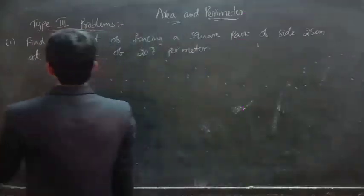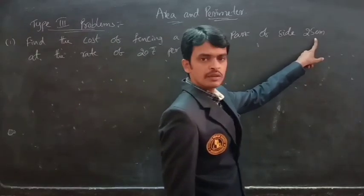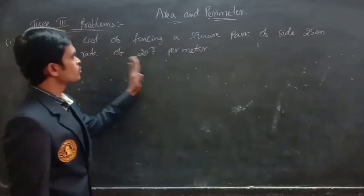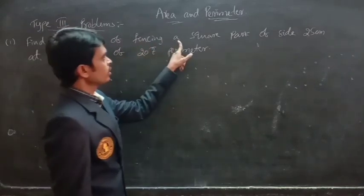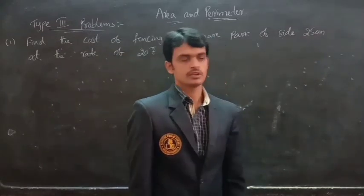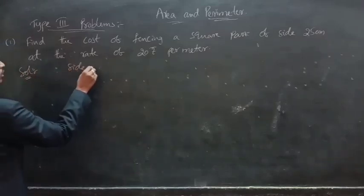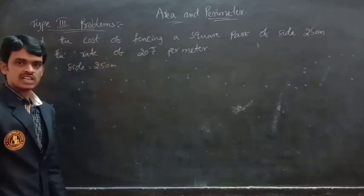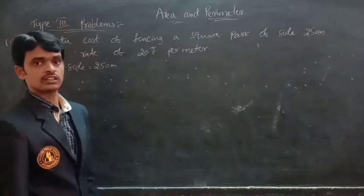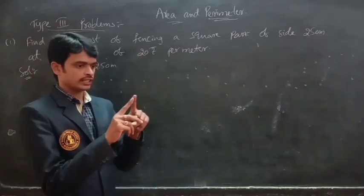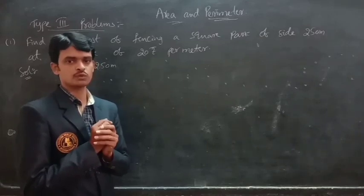First problem: find the cost of fencing a square park of side 250 meters at the rate of 20 rupees per meter. What they are asking is the cost of fencing. The side of the square park is 250 meters. Fencing is done at the boundaries of the square park, so we have to find the perimeter.